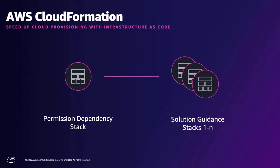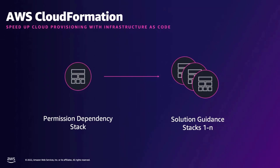There are two kinds of stacks in our solution. The permission dependency stack on the left is executed only one time per AWS account — it contains specific AWS permissions to build a workflow and access S3, Amazon Forecast APIs, and more. It also creates a new S3 bucket for your data, or you can leverage a pre-existing one. On the right are solution guidance stacks — one for each workload you want to manage. These are all decoupled, so new ones can be created or old ones deprecated without tight dependencies between them.